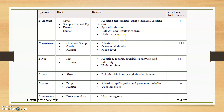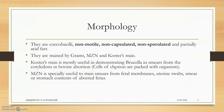Zoonotic aspects are present in Brucella melitensis, which causes Malta fever, and in Brucella abortus, which is called undulant fever, and also in Brucella suis, which also causes undulant fever. Regarding morphology, these are coccobacilli — non-motile with no flagella, non-capsulated, non-sporulating, and partially acid-fast. They are stained by Gram's stain and modified Ziehl-Neelsen stain due to their partial acid-fast character.